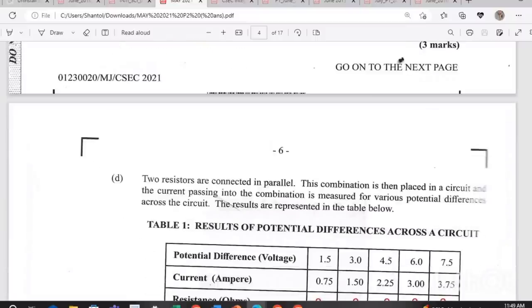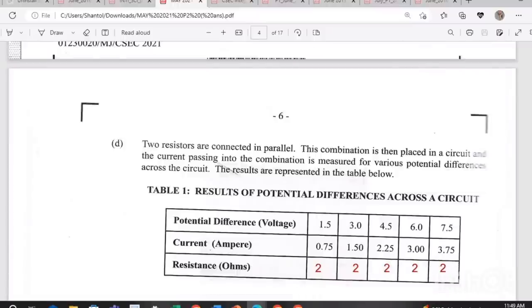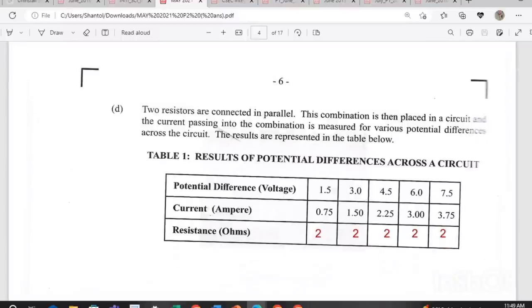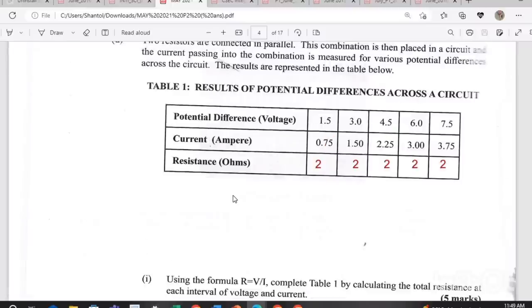Two resistors are connected in parallel. This combination is then placed in a circuit and the current passing into the combination is measured for various potential differences across the circuit. The results are represented in the table below. In the table, they give you potential difference, they give you current and then they also have resistance. Now in the table, you see we have a lot of numbers there, two, two, two, two, two and two. Now you're going to see how I got those numbers.